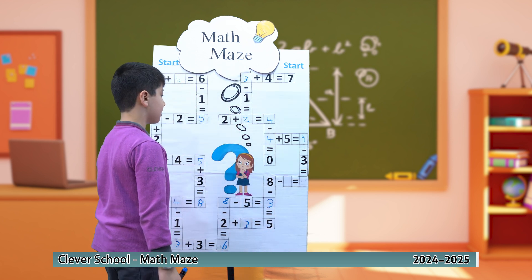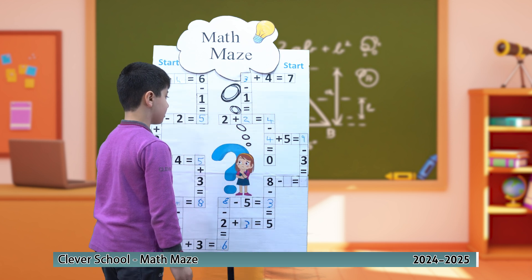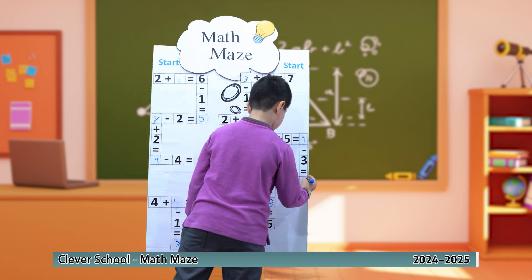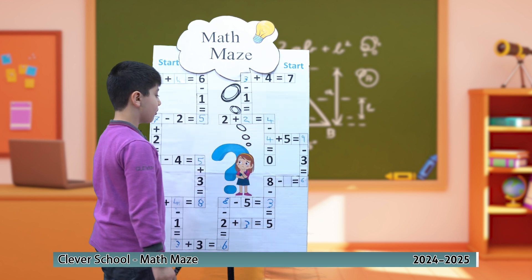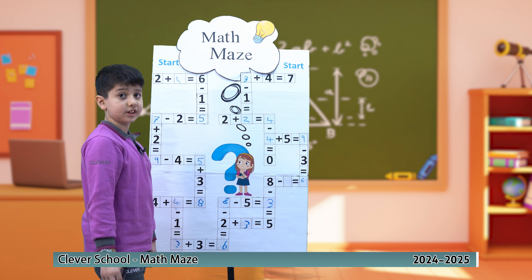9 minus 3 equals 6. 8 minus which number equals 6? 2.